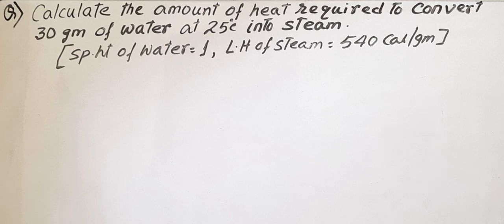So we know that heat loss equal to heat gain. Now see the question: calculate the amount of heat required to convert 30 grams of water at 25 degree centigrade into steam.